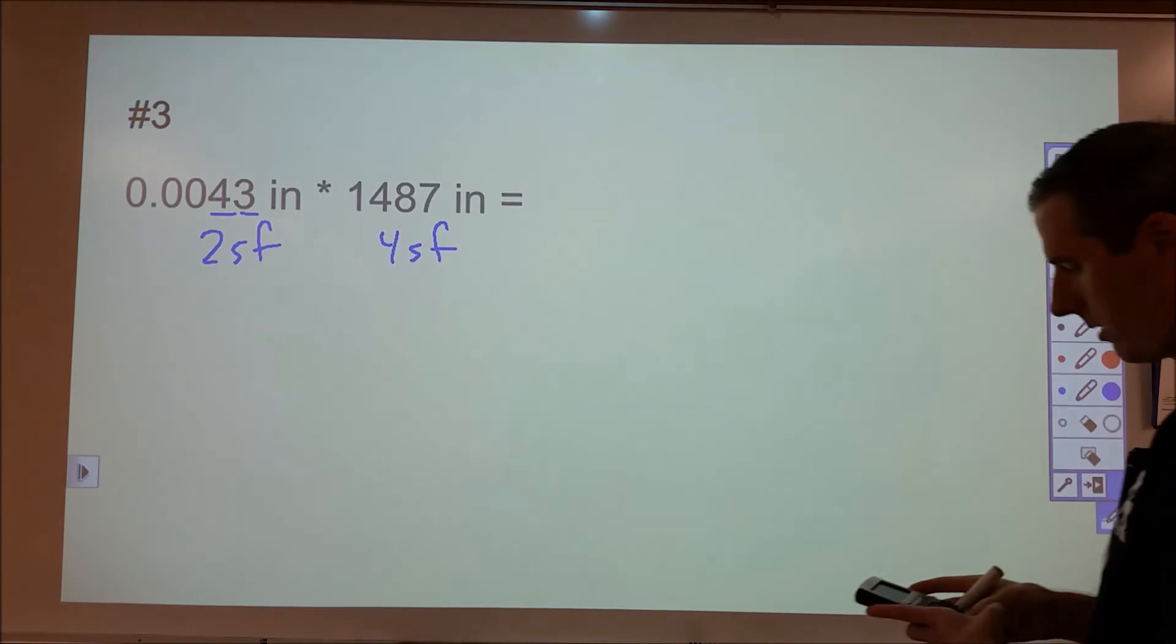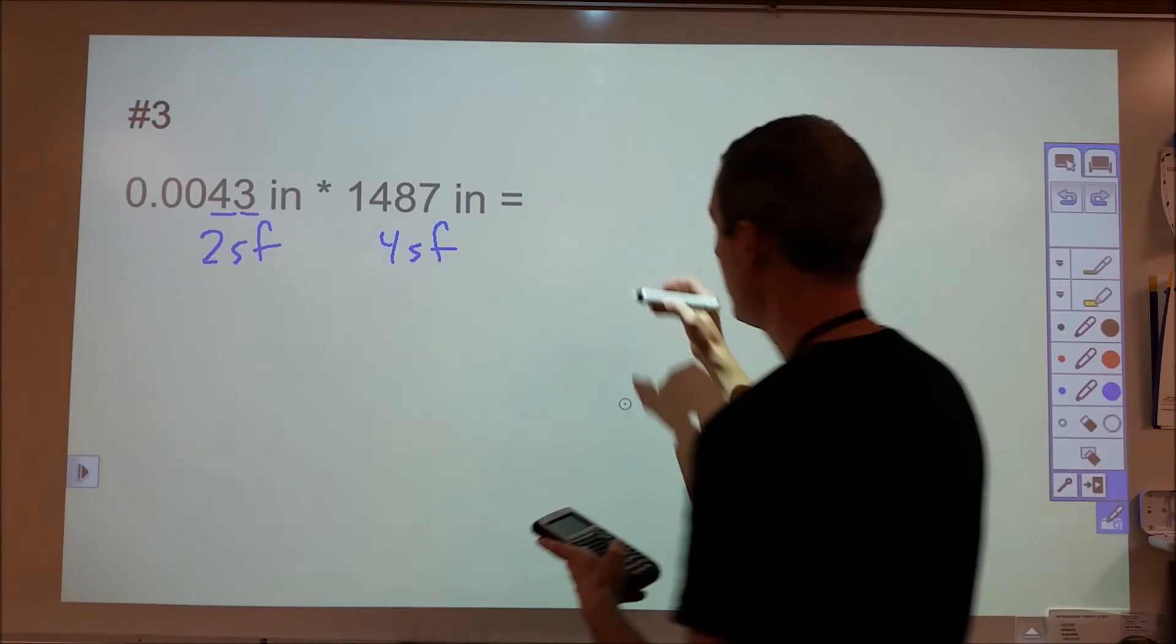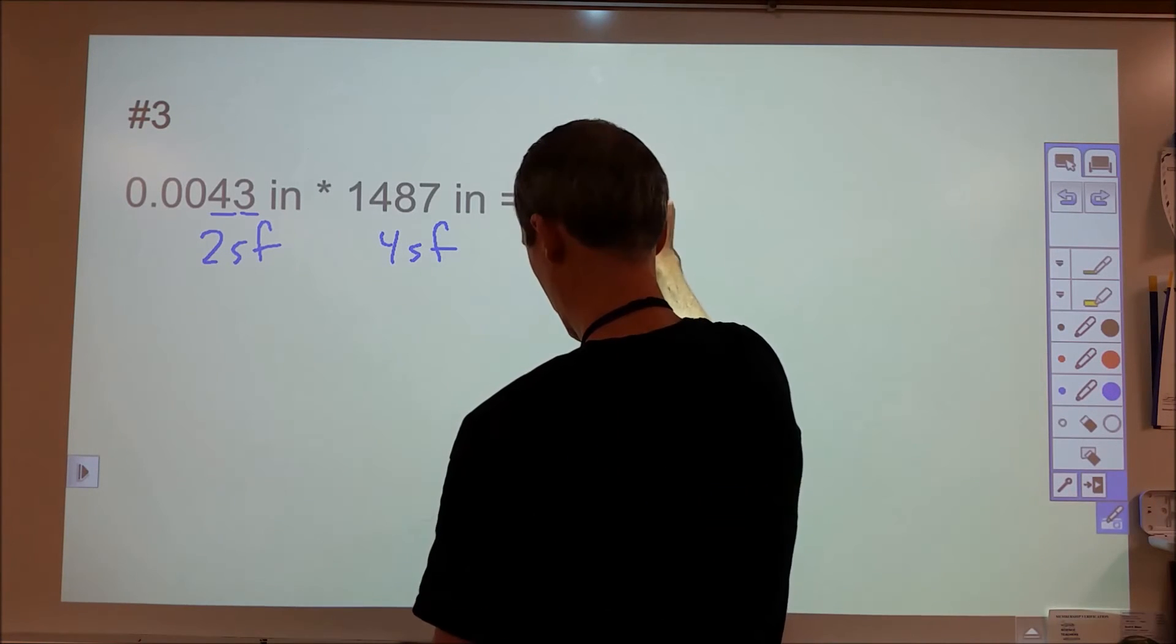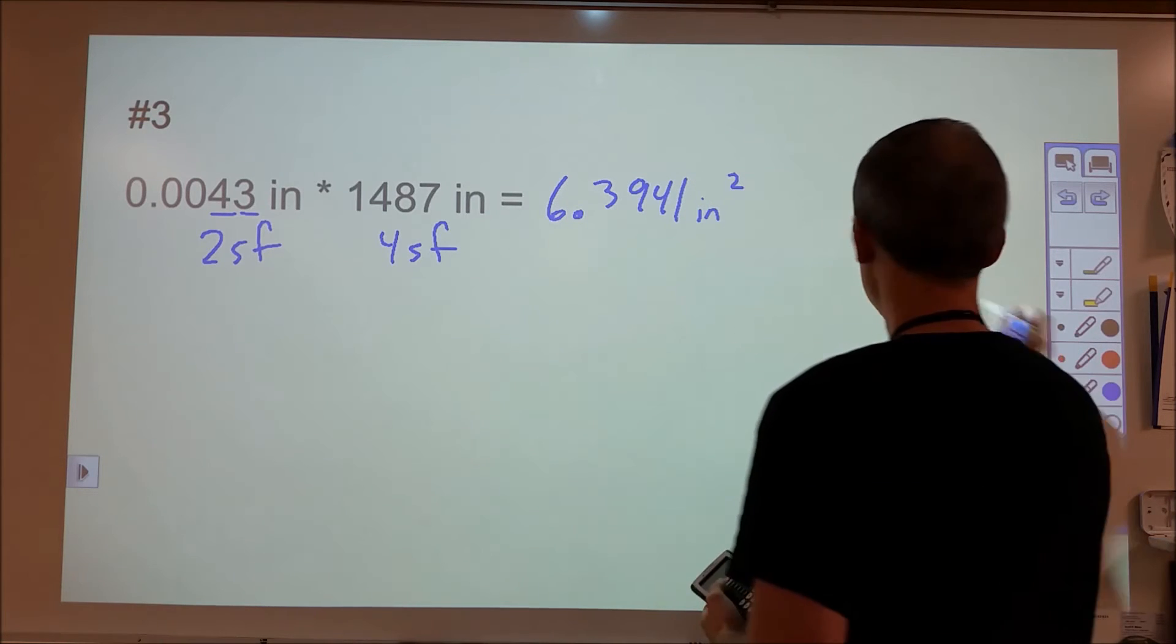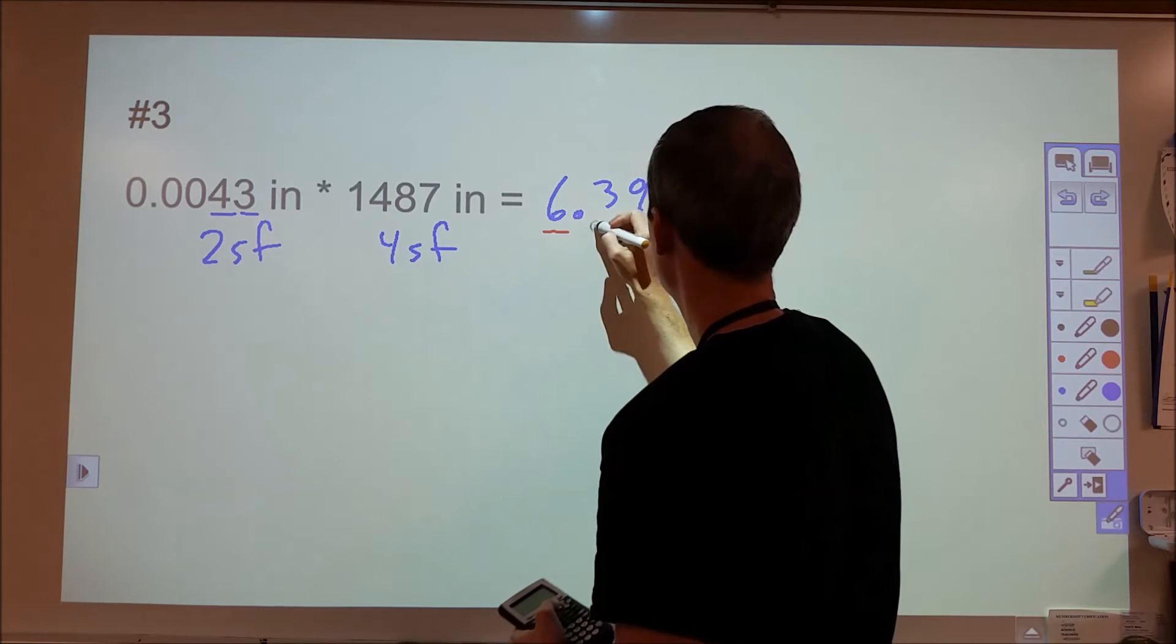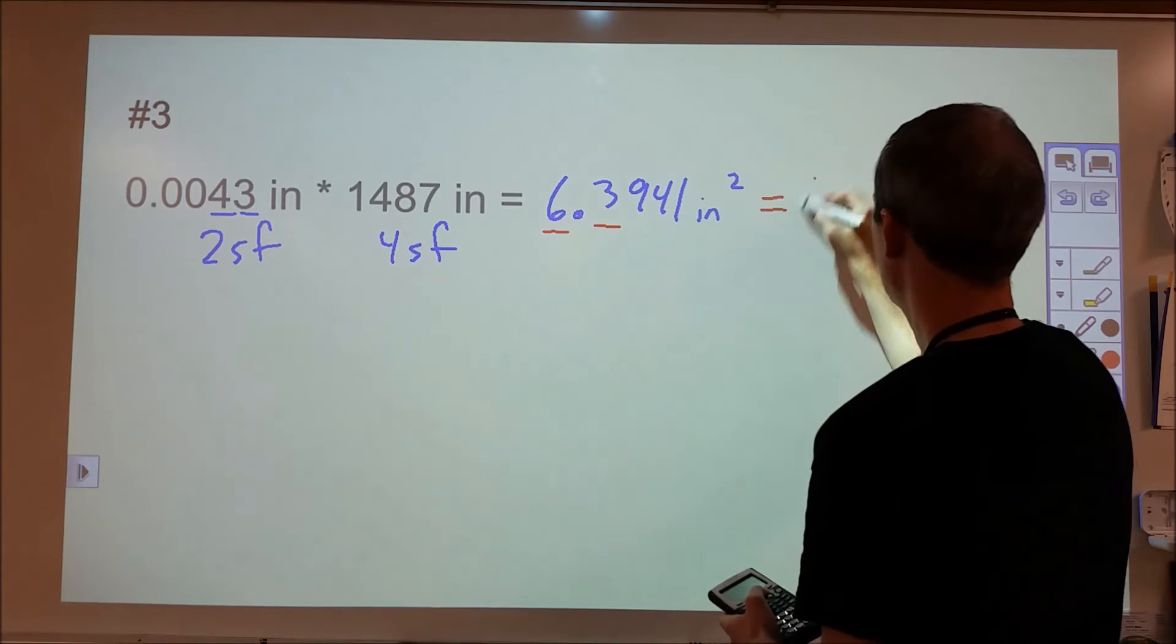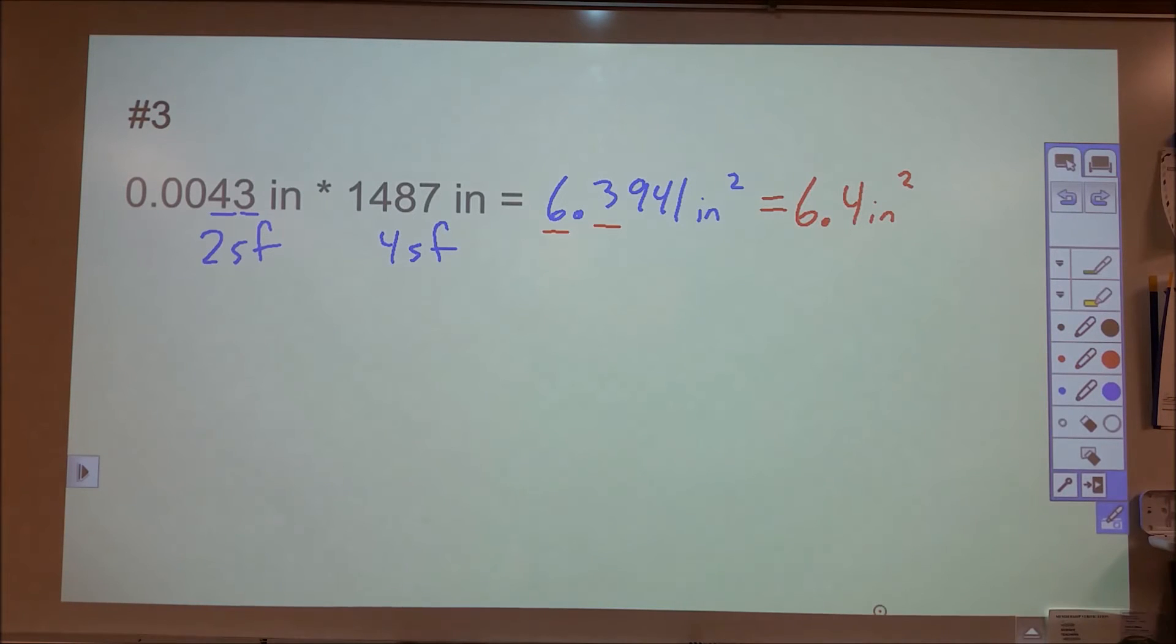So if we go ahead and plug that into a calculator, the calculator tells us that it is 6.3941 inches squared. And then we're going to round that so that it's only two sig figs. So 6.3, we have a 9 next to it, so we'd have 6.4 inches squared as our final answer for our measurement.